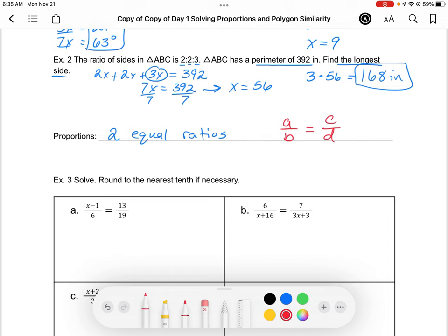To solve proportions, we're using the cross product property, which says that if we're given that proportion a over b equals c over d, then the cross product a times d has to equal the other cross product b times c. We can cross multiply to solve.